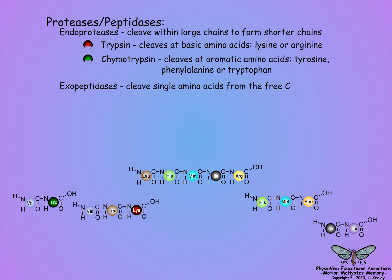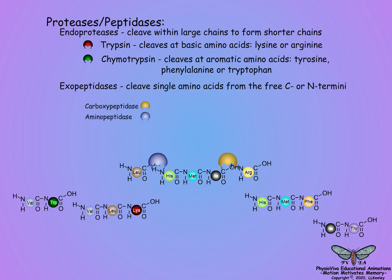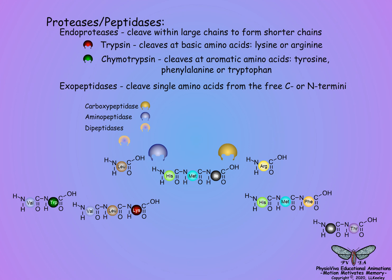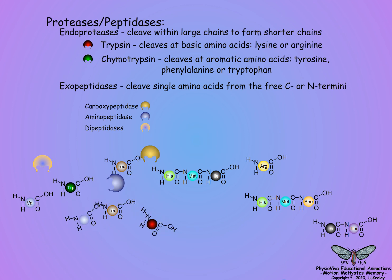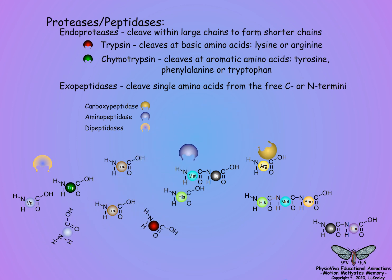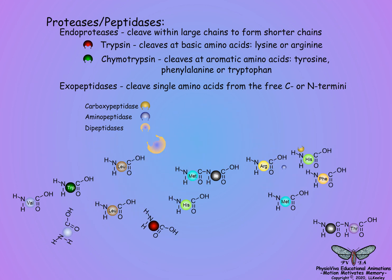Exopeptidases cut single amino acids from the free C or N-terminus. There may also be dipeptidases that split the peptide bond between two amino acids. In this way, large proteins and polypeptides are degraded to free amino acids ready for absorption into the insect body.